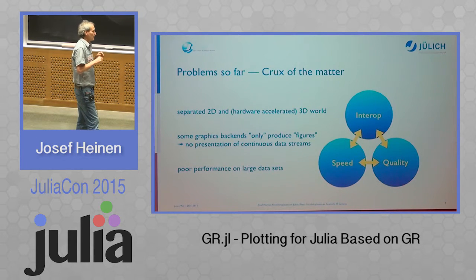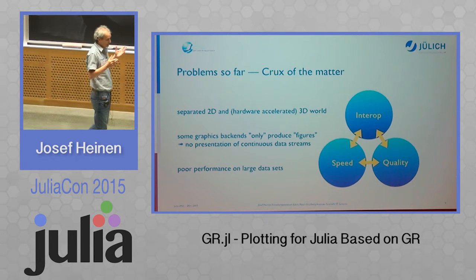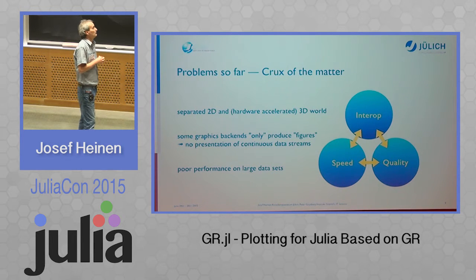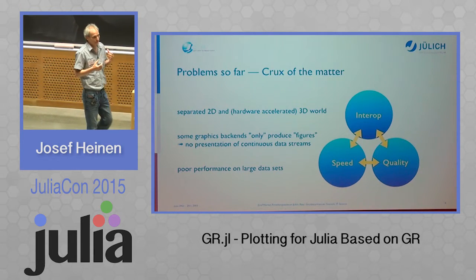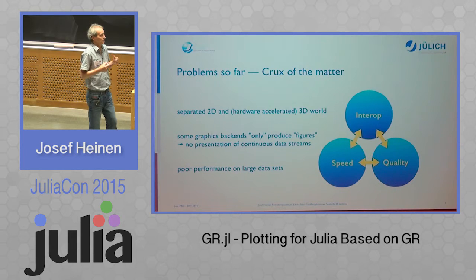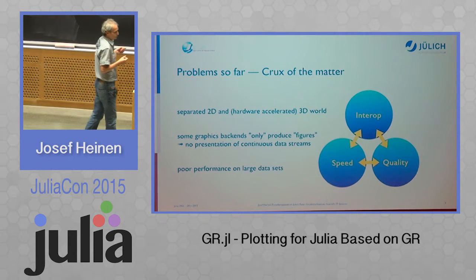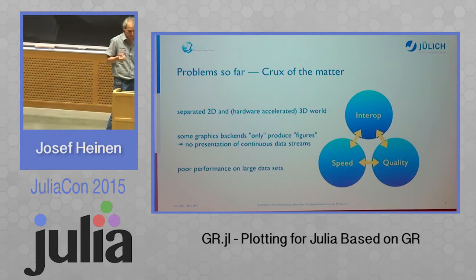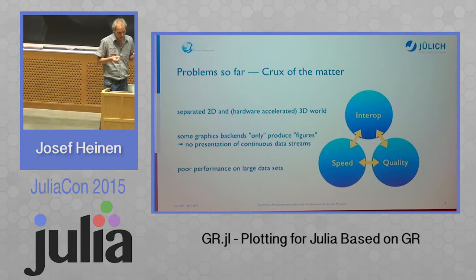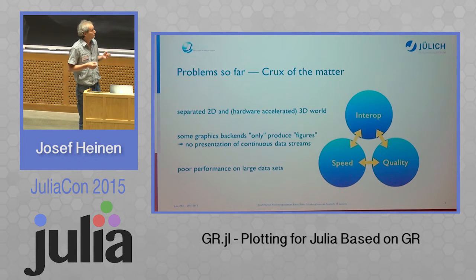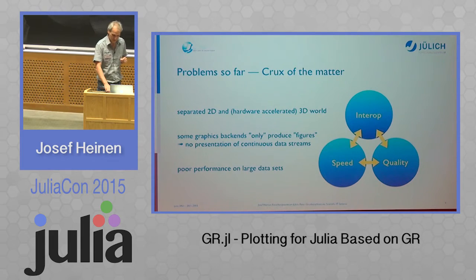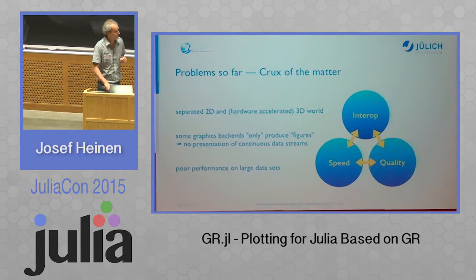Another problem, for example with Matplotlib — which is known as PyPlot in the Julia world — is that they only produce figures. So it's not very easy to produce animations on the fly. You can do this in PyPlot or Matplotlib, but it's not very easy going.